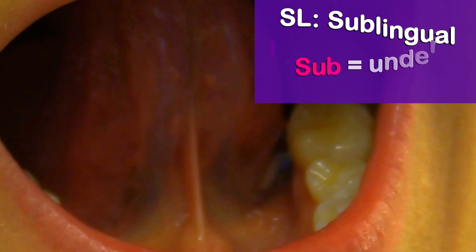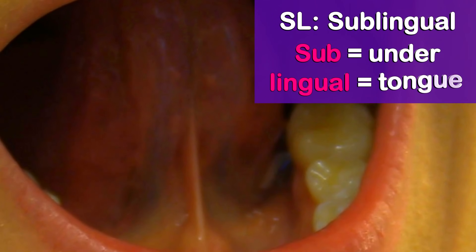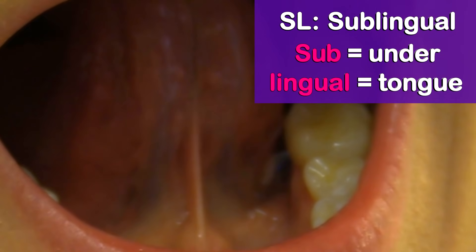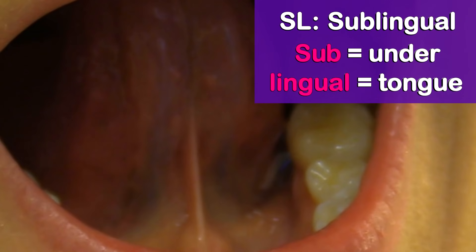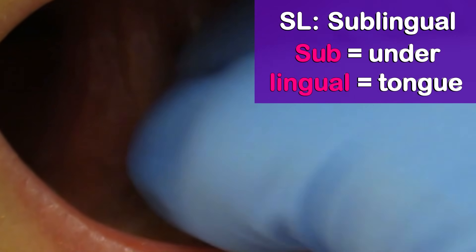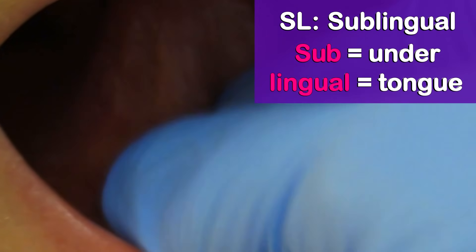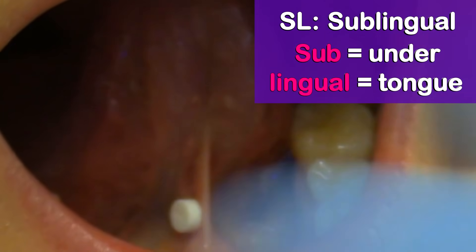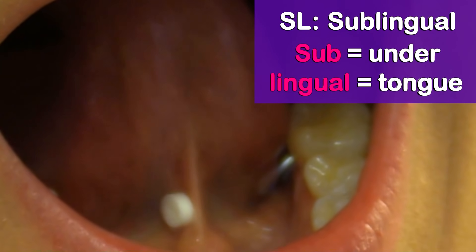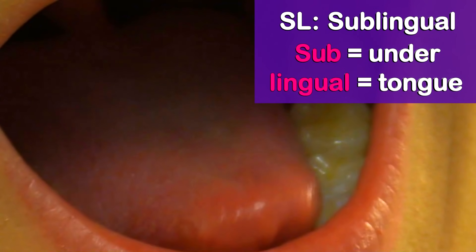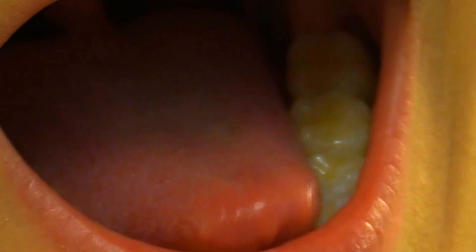Then we have the sublingual route, abbreviated SL. Sub means under and lingual means tongue, so we give the medication underneath the tongue. A medication you may encounter as a nurse that goes under the tongue is nitroglycerin. If your patient is having acute chest pain and it's ordered, you can give them a nitroglycerin tablet to hopefully help relieve their chest pain.